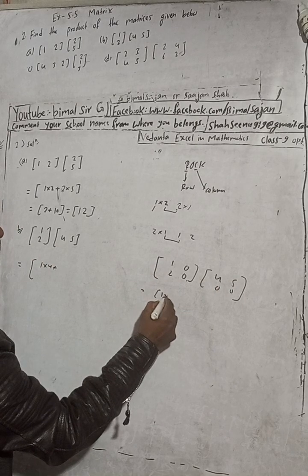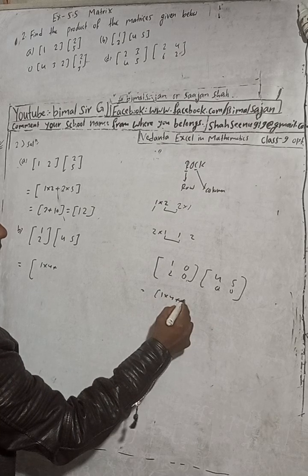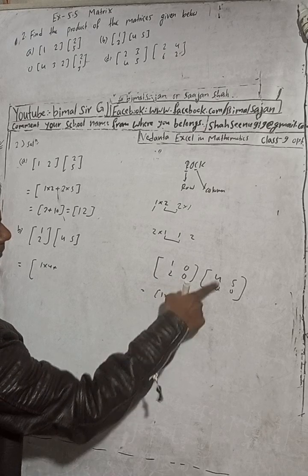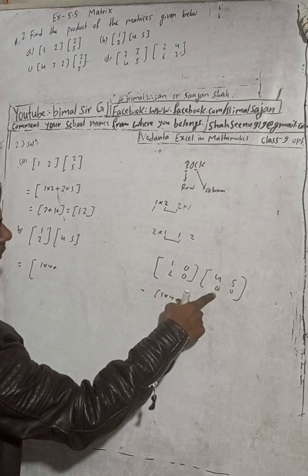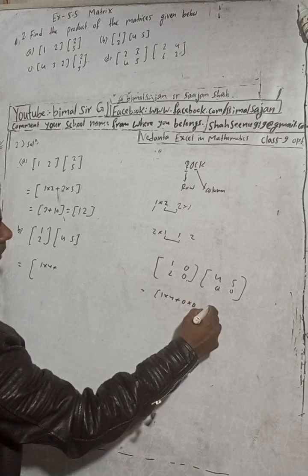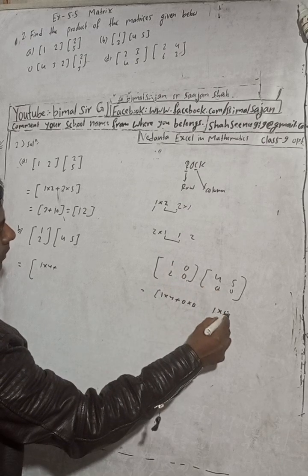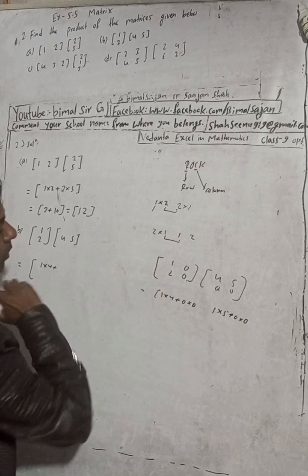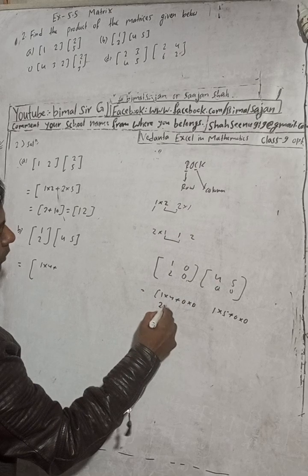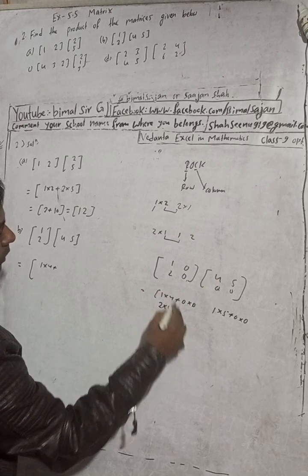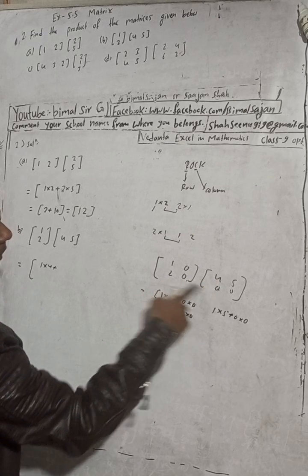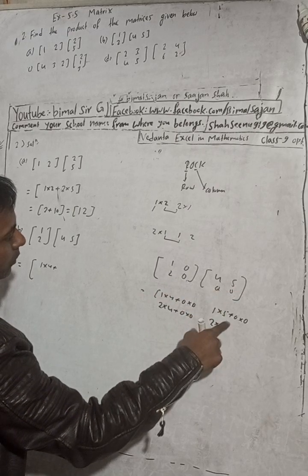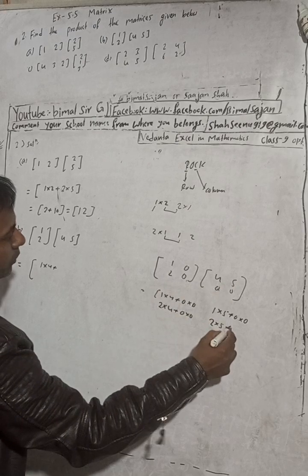So what is the result here? 1 into 4, then 1 into 4 plus 0 into 0. Now 1 into 5, then 1 into 5 plus 0 into 0. Same now with this term: 2 into 4, then 2 into 4 plus 0 into 0. Again: 2 into 5 plus 0 into 0.